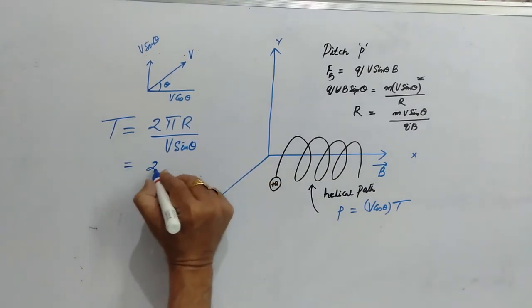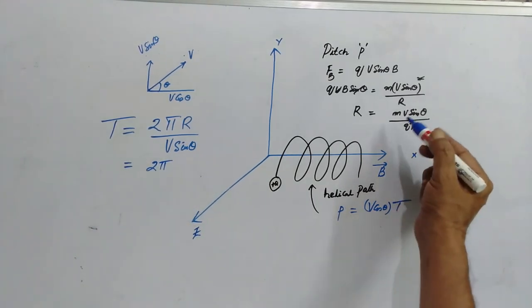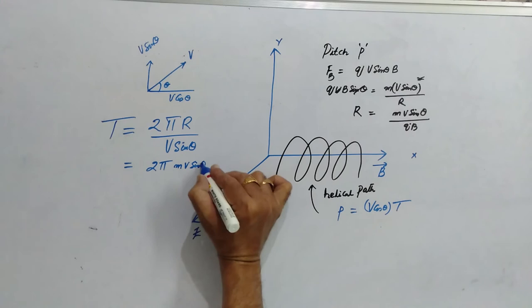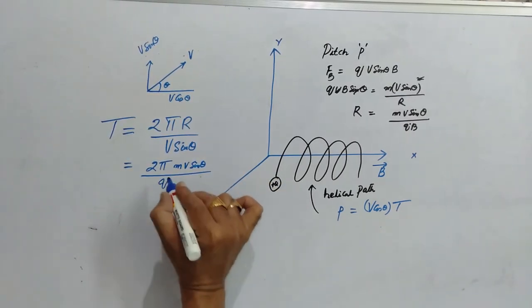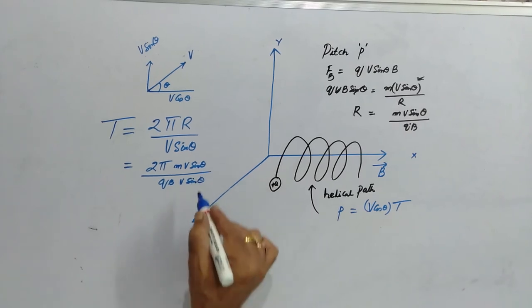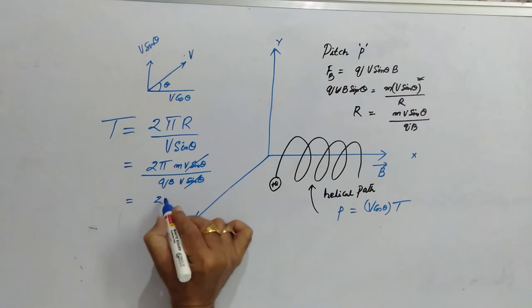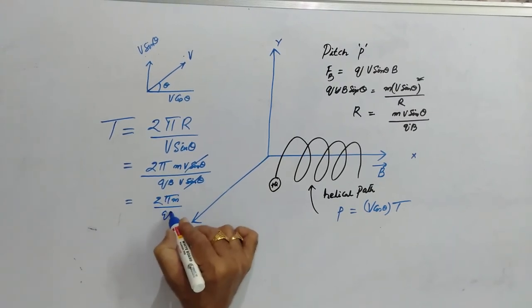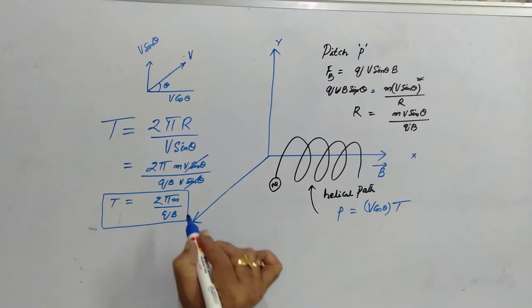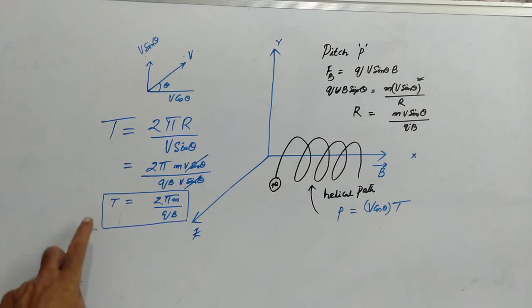Now, 2 pi r is nothing but M V sin theta by Q B. So, this is cancelled and finally, we obtain the same expression what we have obtained in the case of the particle projected at 90 degrees to the magnetic field. So, that means whatever the angle of projection may be, the time period remains same.